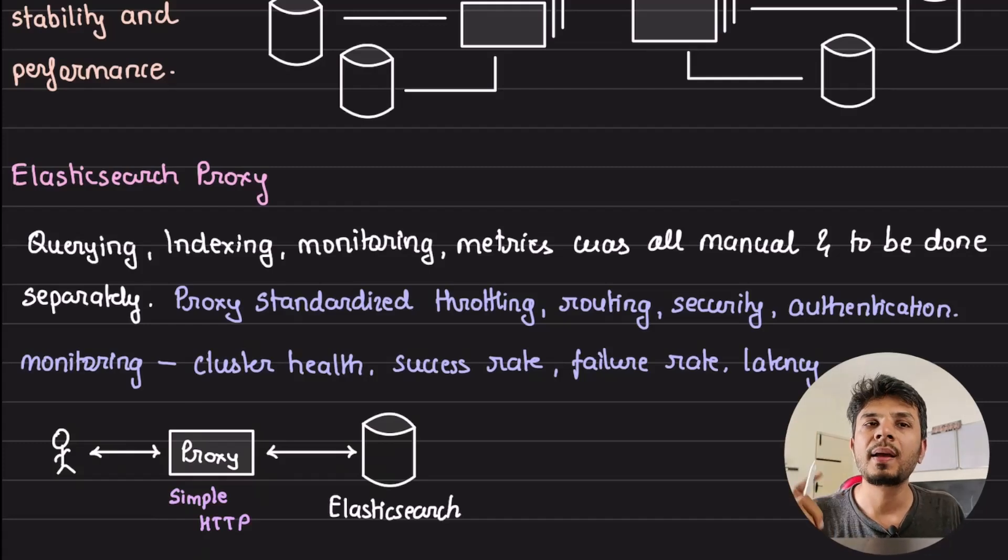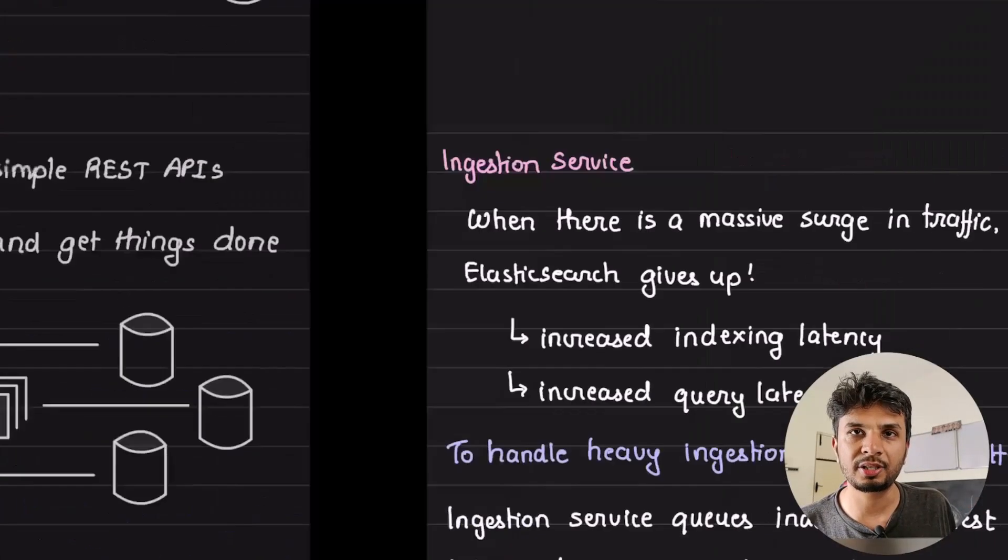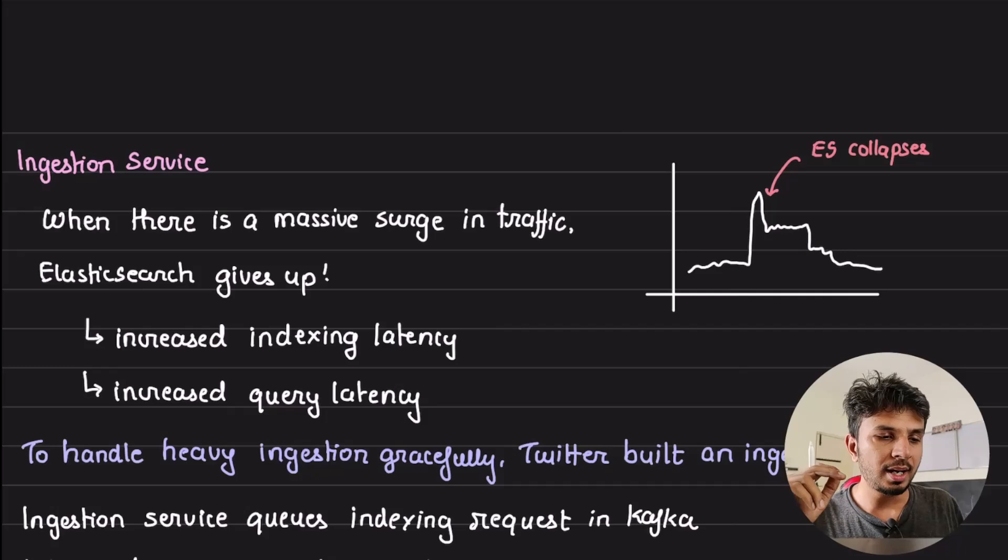This proxy's job was really important. This one layer that was added in, with it obviously it increased the response time by a fraction, but this one centralized layer helps them ensure that the access to cluster is standardized, that the metrics that are published are standardized, the logging is standardized, authentication standardized. This increases the stability of their cluster because now people are not directly interfacing with Elasticsearch.